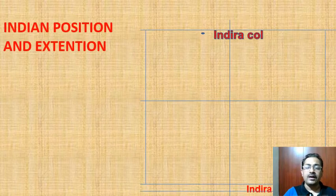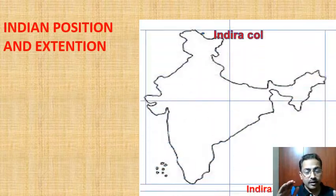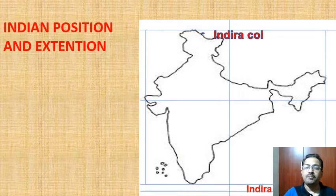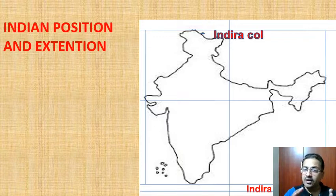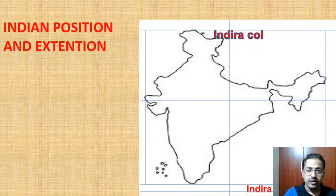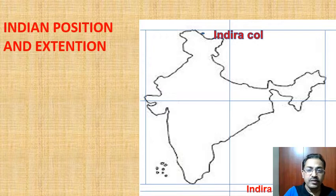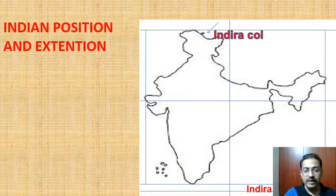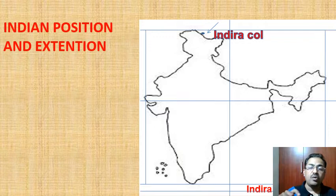Now let us learn the northernmost tip and southernmost tip of India. Here in Jammu and Kashmir, this point shown in blue color is called Indira Col. Indira Col is the northernmost tip of India, situated at the tip of Jammu and Kashmir.